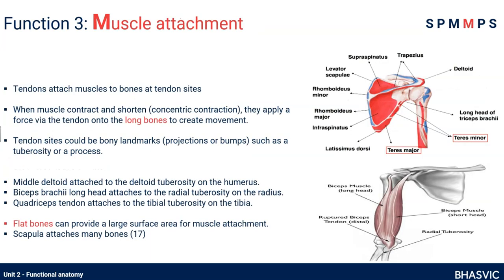The third function is muscle attachment — be careful, this is different to movement. Our muscles extend to tendons which then attach to our bones, so our skeleton is what tendons attach to. Muscles contract, pull on the tendons, pull on the bones, and movement can happen. A nice example is long bones such as the humerus: if our biceps brachii contracts, it pulls on the tendon attached to the radius, pulling our forearm up — that's flexion at the elbow joint.